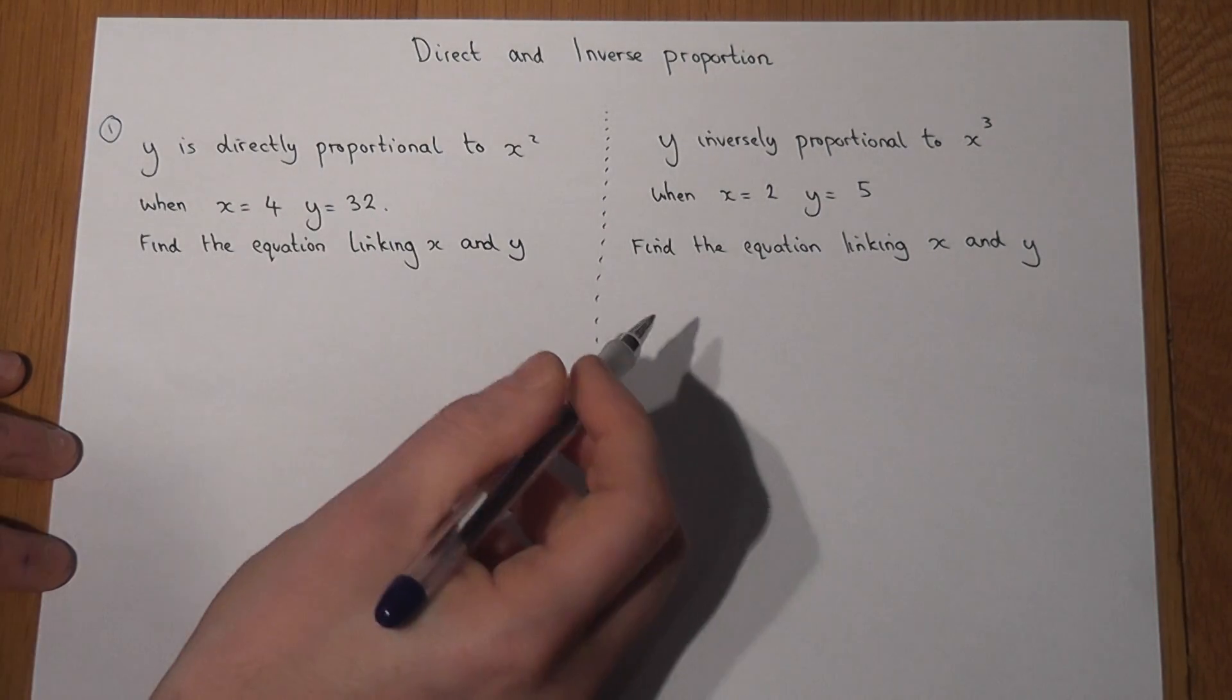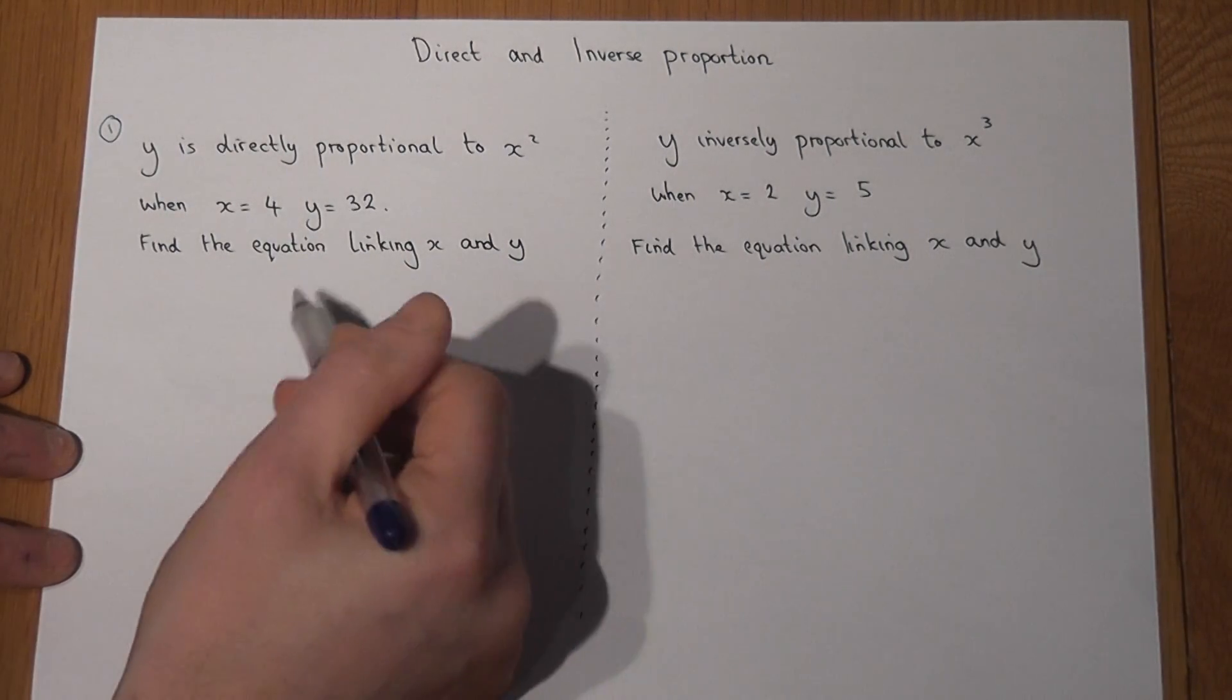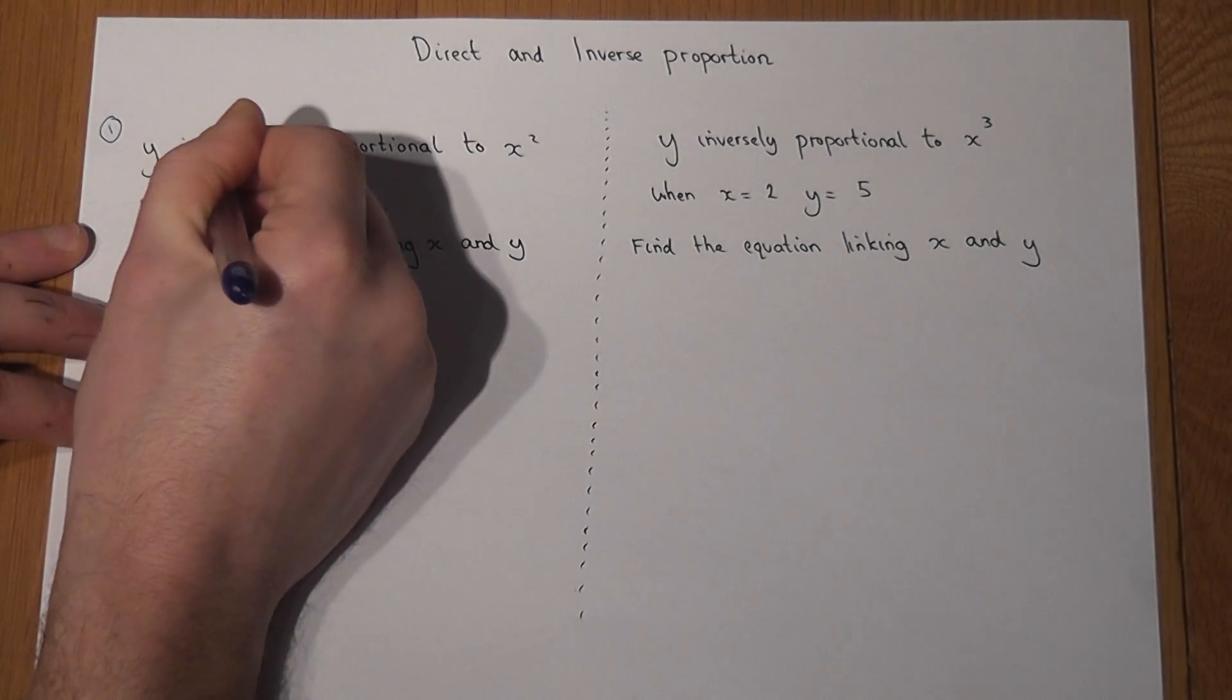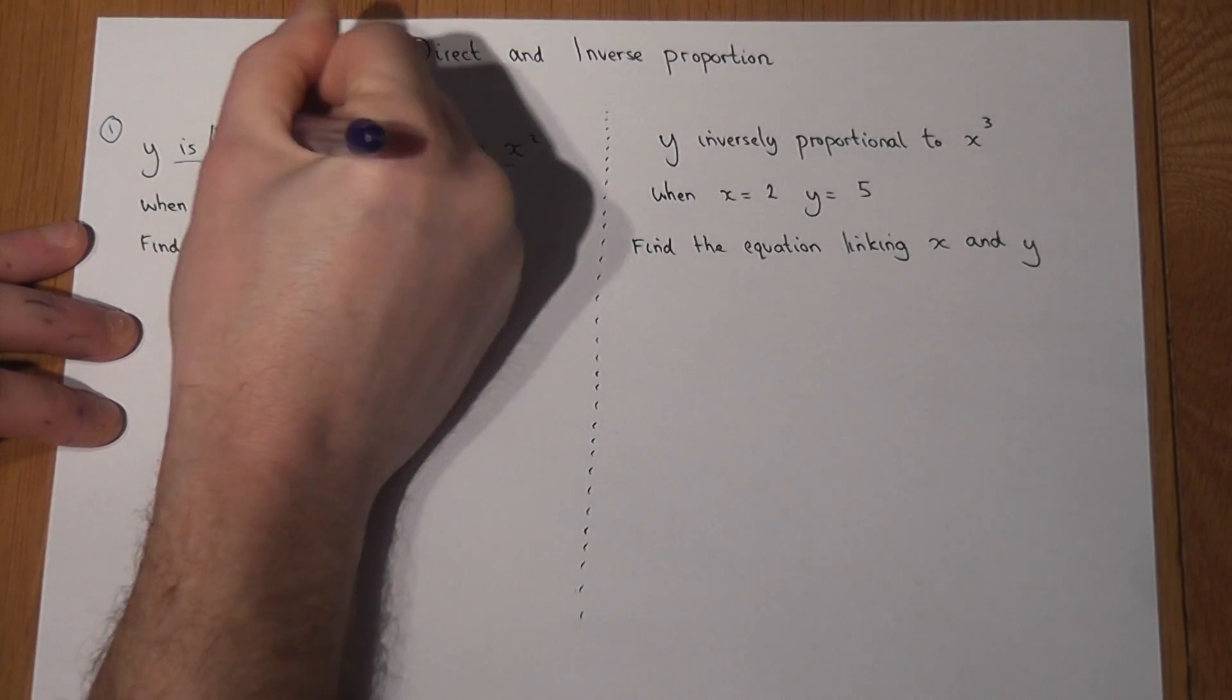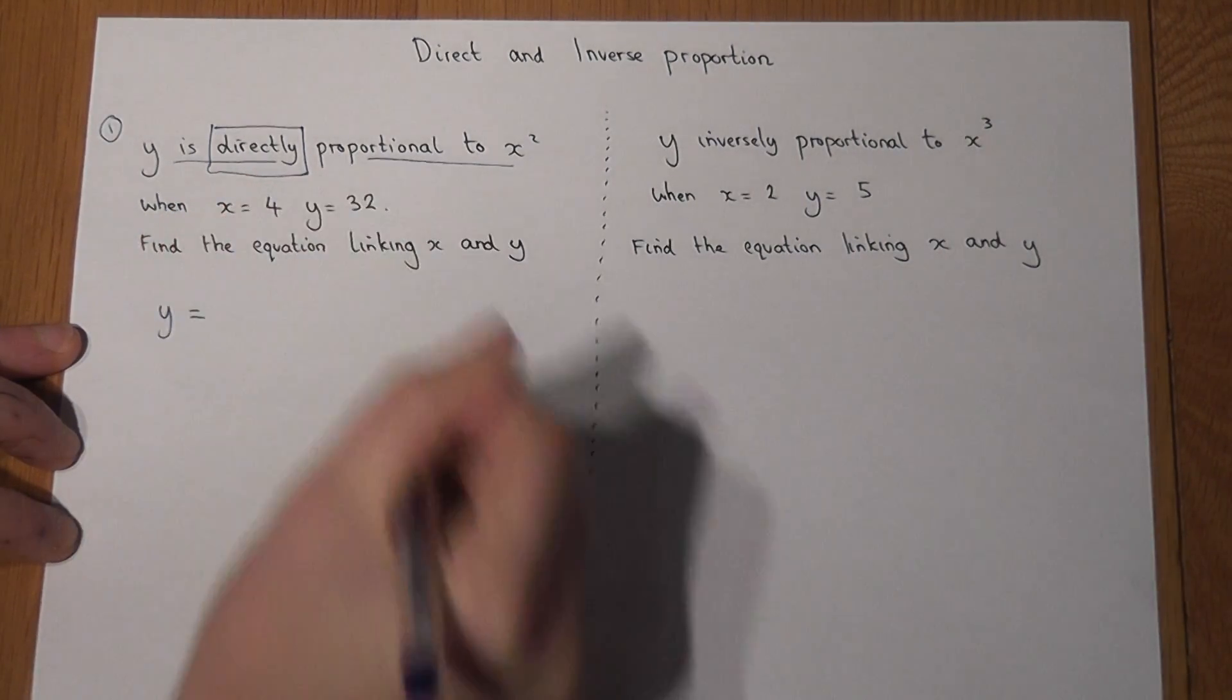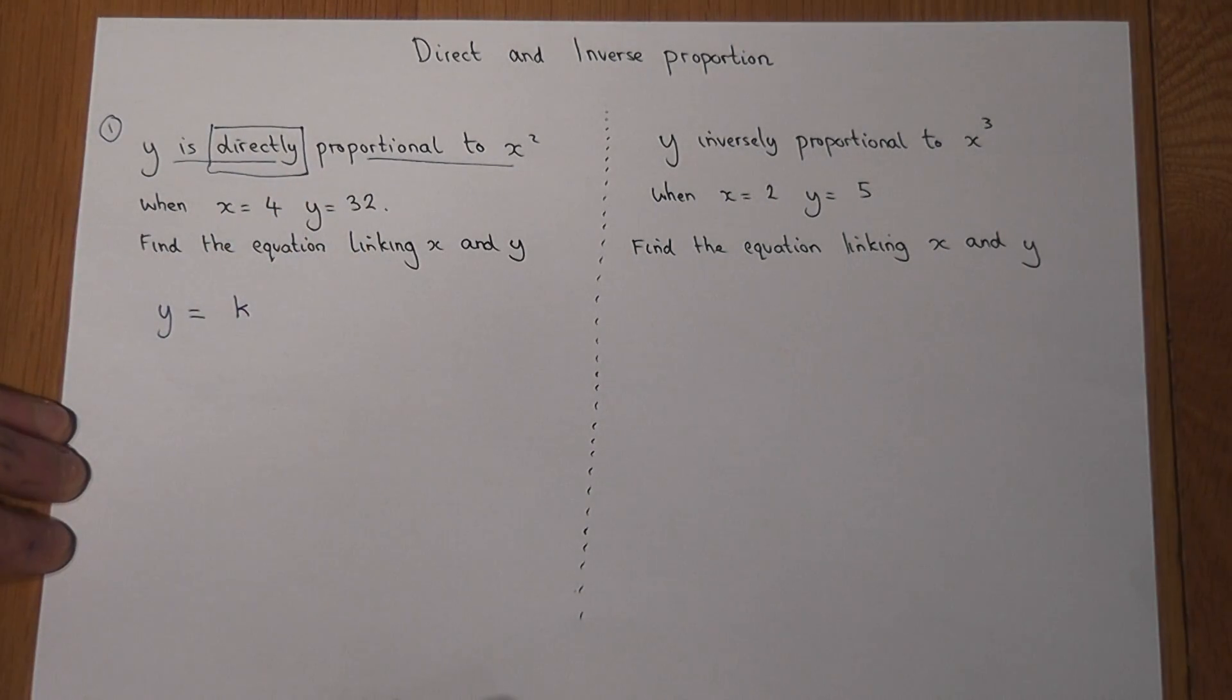An example: when x is 4, y equals 32, and we're asked to find the equation linking x and y. Now this statement here and this idea of direct proportion means that y is equal to some unknown number, which we often refer to as k, times by x squared.